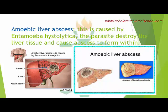Another liver disease is amoebic liver abscess. It is caused by a protozoan parasite, Entamoeba histolytica. What it does is burrow into the liver tissue and destroy it, forming an abscess within it. The abscess can contain pus inside. This is a major disease that needs to be taken care of by medical professionals.